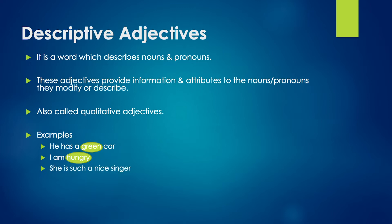She is such a nice singer — nice is the descriptive adjective in this sentence. I saw a running bunny — the adjective in this sentence is running.